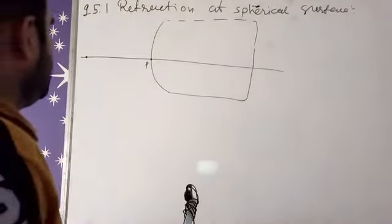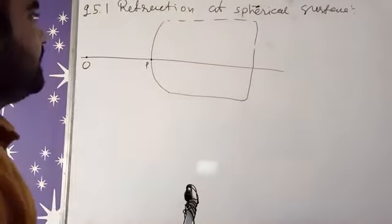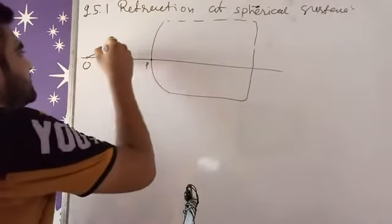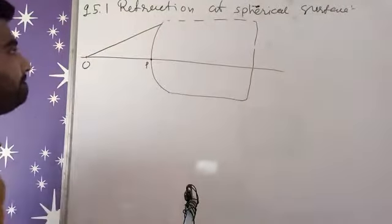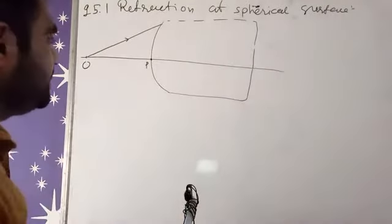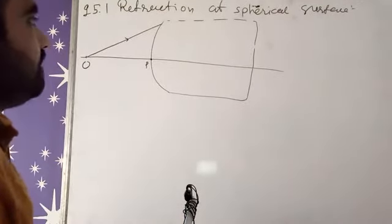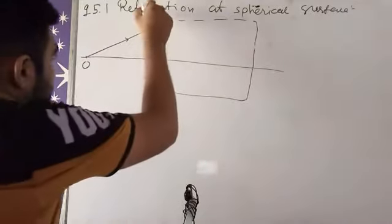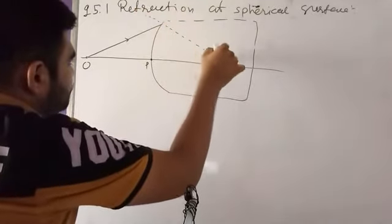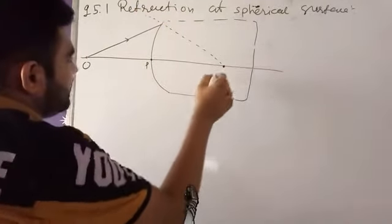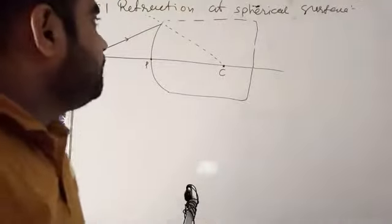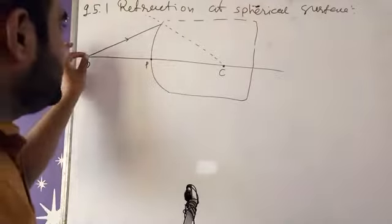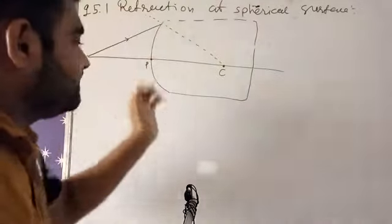This is our principal axis. Now if our object is at point O, from this point light rays are passing through the separating medium as the incident ray. Whenever we draw a normal to this surface, that normal passes through a point called the center of curvature, which gives us the radius of curvature.